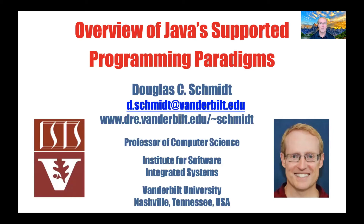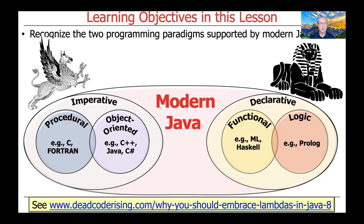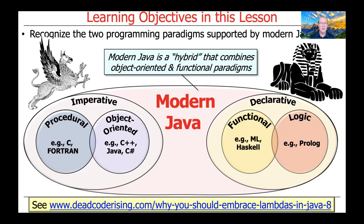Welcome to our overview of Java's supported programming paradigms. Modern Java, by which I mean Java from 2014 onwards, supports two primary programming paradigms. One is the imperative model, which includes object-oriented programming, and the other is the declarative model, which supports so-called functional programming. You can think of Java as essentially a hybrid language that supports both these programming paradigms.